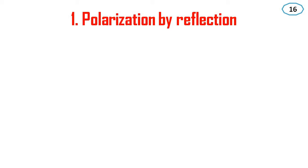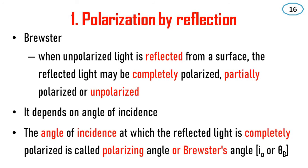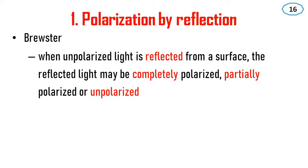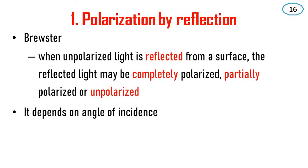Polarization by Reflection. According to Brewster, when an unpolarized light is reflected from a surface, the reflected light may be Completely Polarized, Partially Polarized, or Unpolarized. It depends on the angle of incidence.